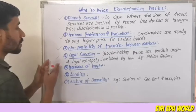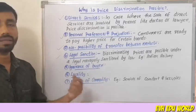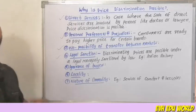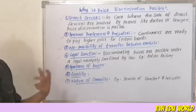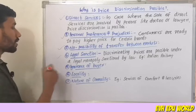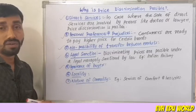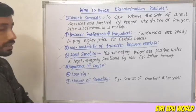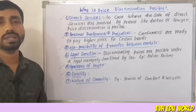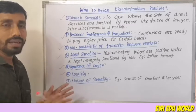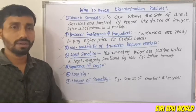The first condition is legal sanction — discriminating prices are possible under a legal monopoly sanctioned by law, for example Indian Railways. The next condition is ignorance or bias — if buyers have a lack of knowledge, price discrimination is possible. The next condition is locality — in foreign markets versus domestic markets, or different local areas, different prices are possible.